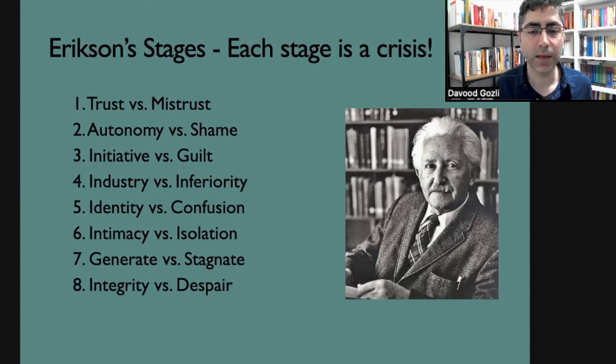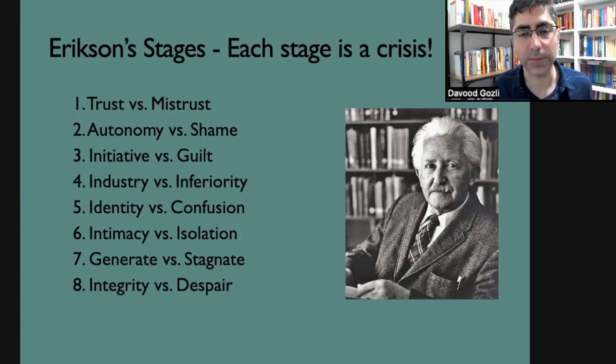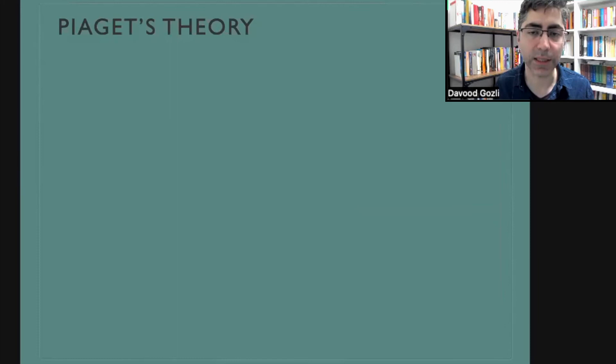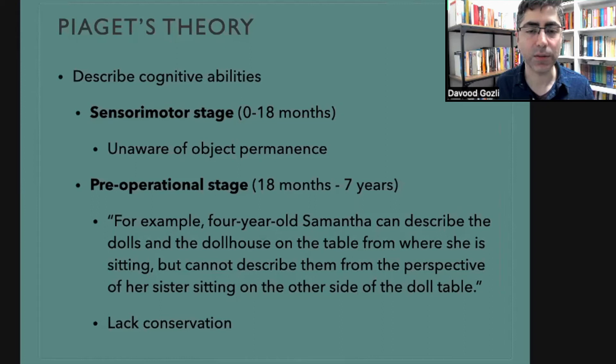Erikson's model covers the entirety of human life up to old age. Similar to Freud, it is a psychodynamic model that tries to capture the emotional and dramatic aspect of human life. Piaget's theory, by contrast, is more modest and tackles the person's style of knowing — their cognitive abilities.